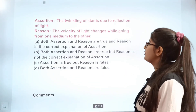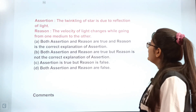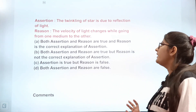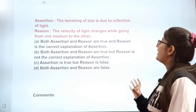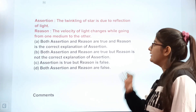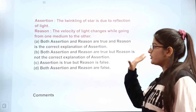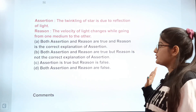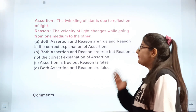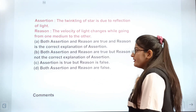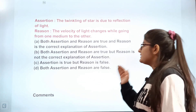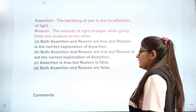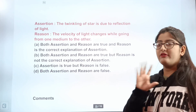Question 21 is an assertion-reason question for you to answer in the comments. Assertion: Twinkling of stars is due to reflection of light. Reason: The velocity of light changes while going from one medium to another. Options: A when both assertion and reason are true and reason explains assertion, B when assertion is true but reason is not the explanation, C when assertion is true and reason is false, D when both are false.